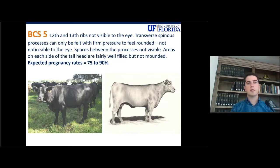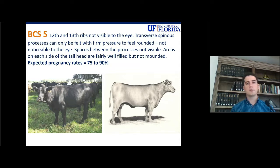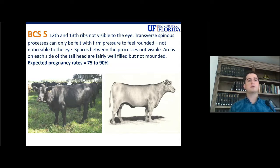A cow at body condition score 5: you don't see the ribs, you don't see the backbone, and the tail head has some fat in it but it's not full yet. If the cow calves on a body condition score of 5, the expected pregnancy rates will be somewhere between 75% to 90%.